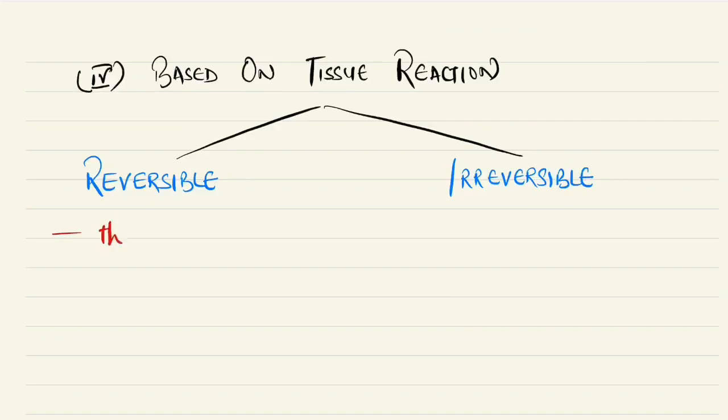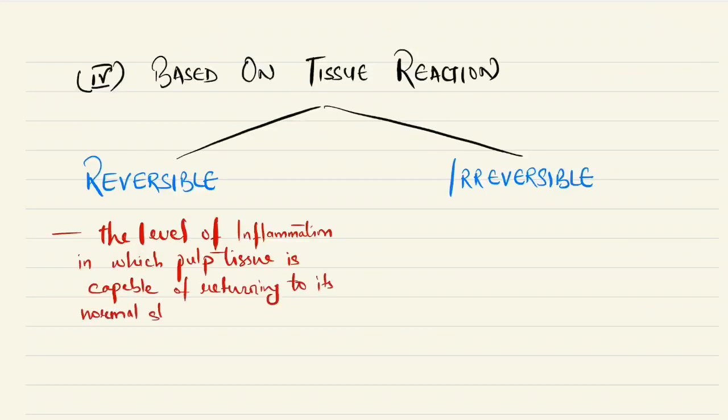Now when it is reversible, then the level of inflammation in which the pulp tissue is capable of returning to its normal state of health even if the noxious stimuli is removed.